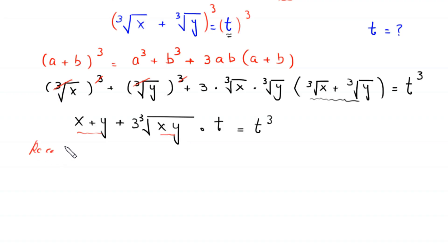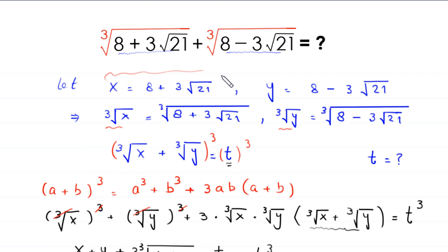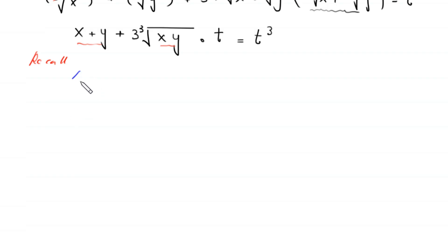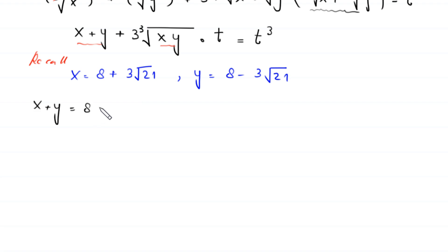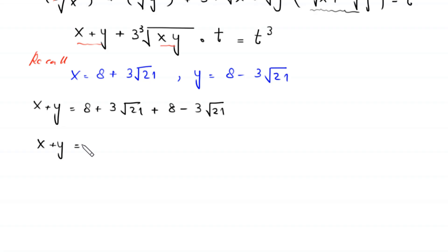Recalling that x equals 8 plus 3 times root 21 and y equals 8 minus 3 times root 21, we compute x plus y: (8 plus 3 root 21) plus (8 minus 3 root 21). The terms with 3 root 21 cancel, and 8 plus 8 equals 16. So x plus y equals 16.